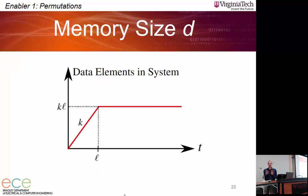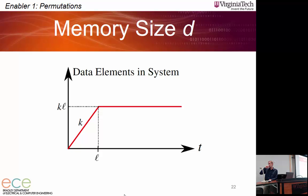Once you have the execution times, you know the latency: it's the execution time of the first output node, equal to L on the graph. The maximum number of data elements in the system is k × L, and with k memory arrays, each memory array needs depth L. So memory depth D = L.